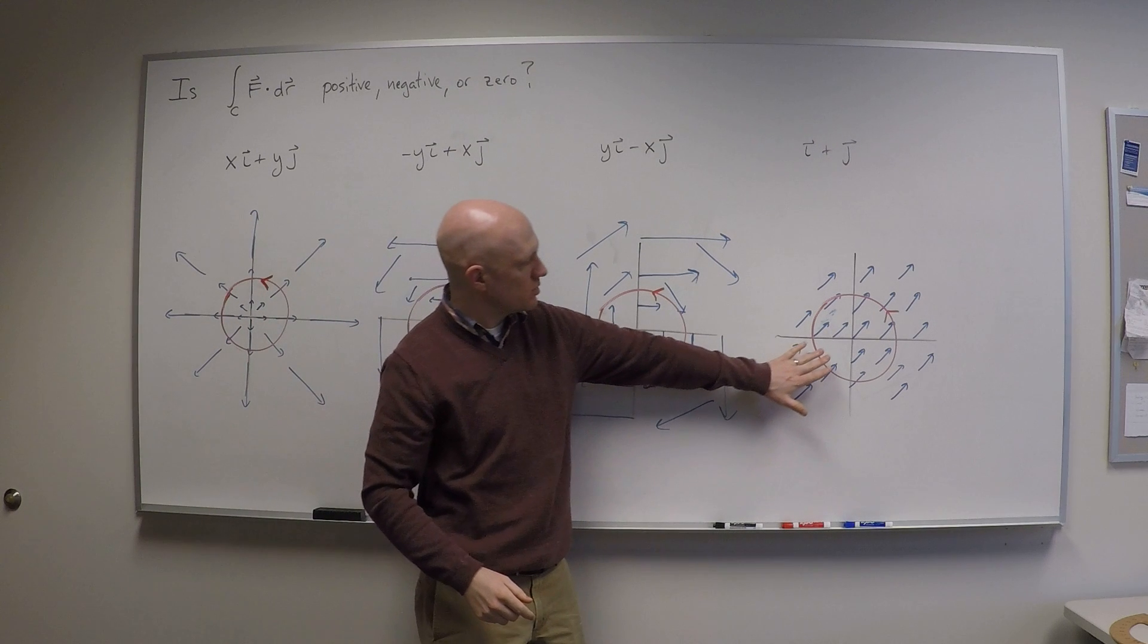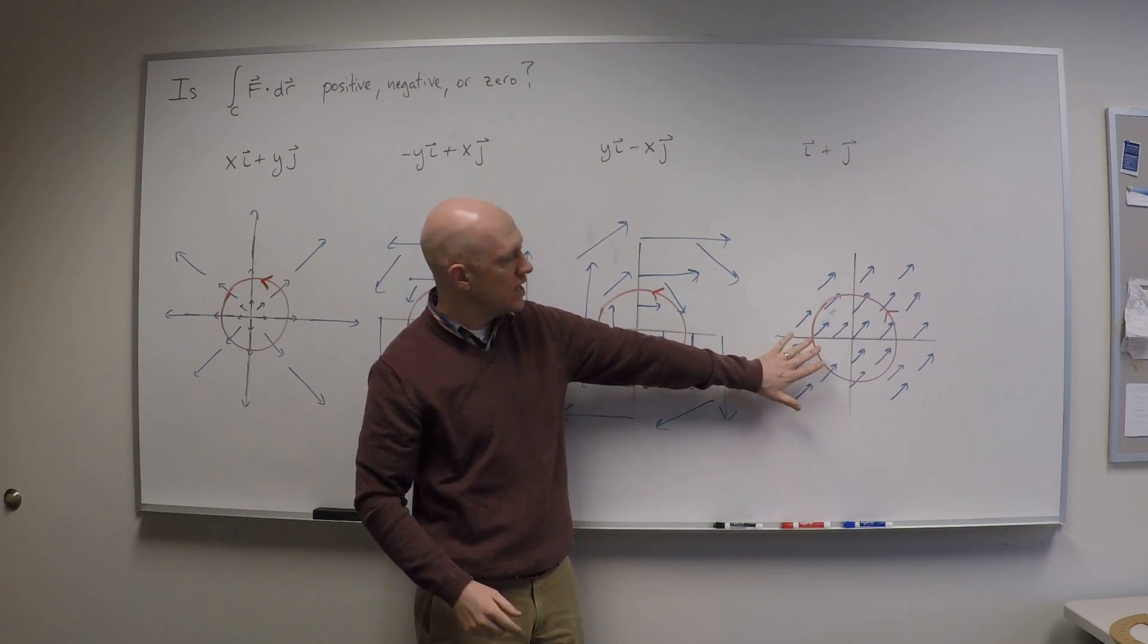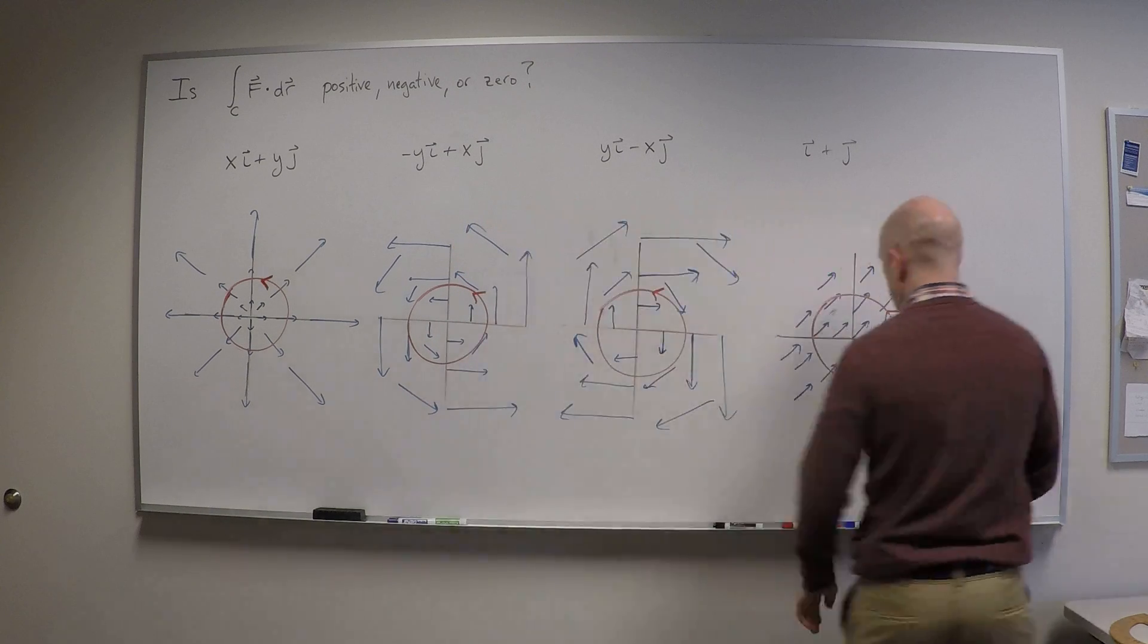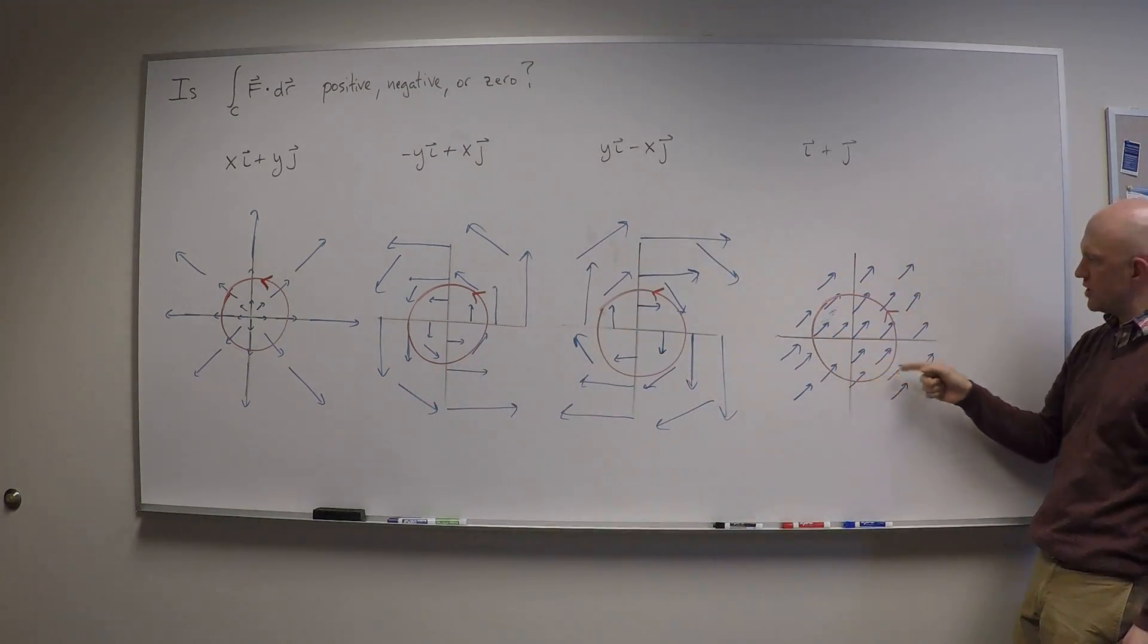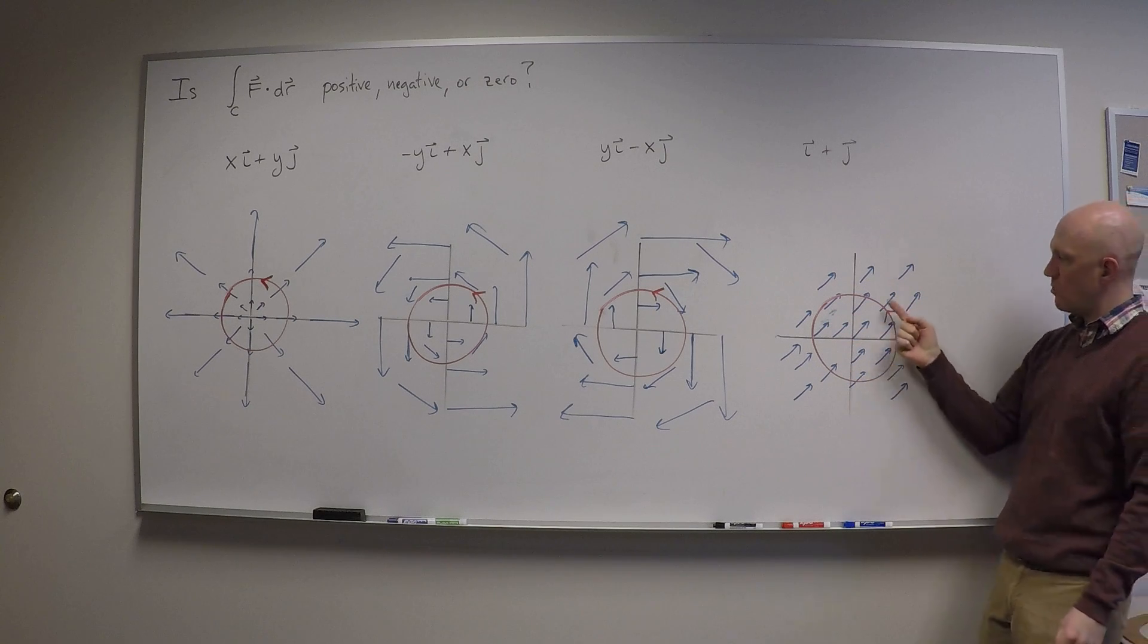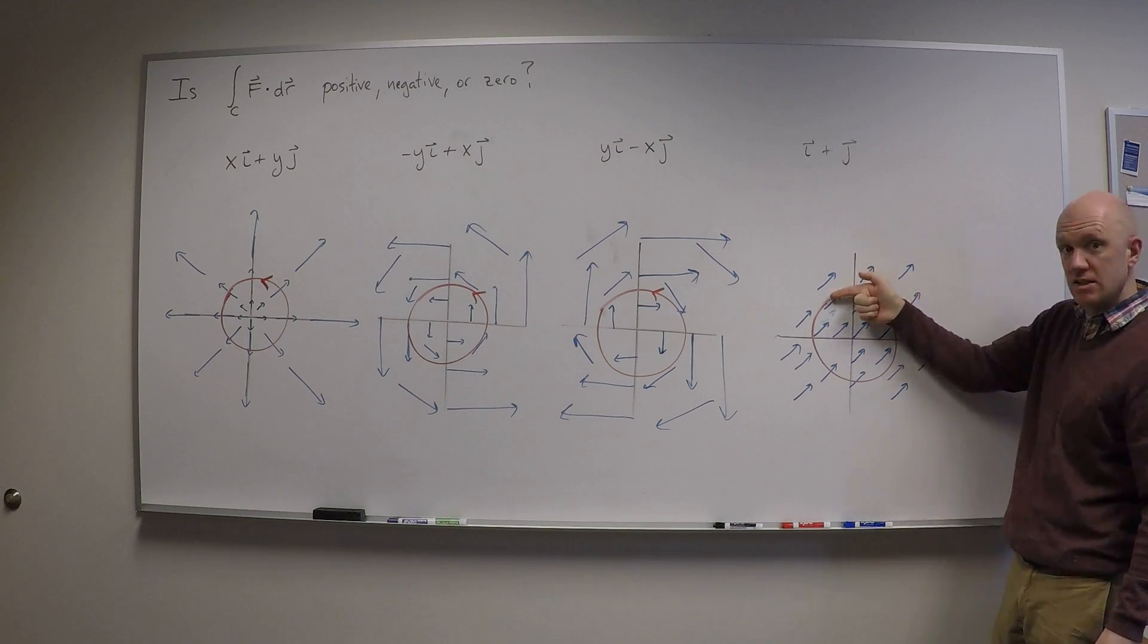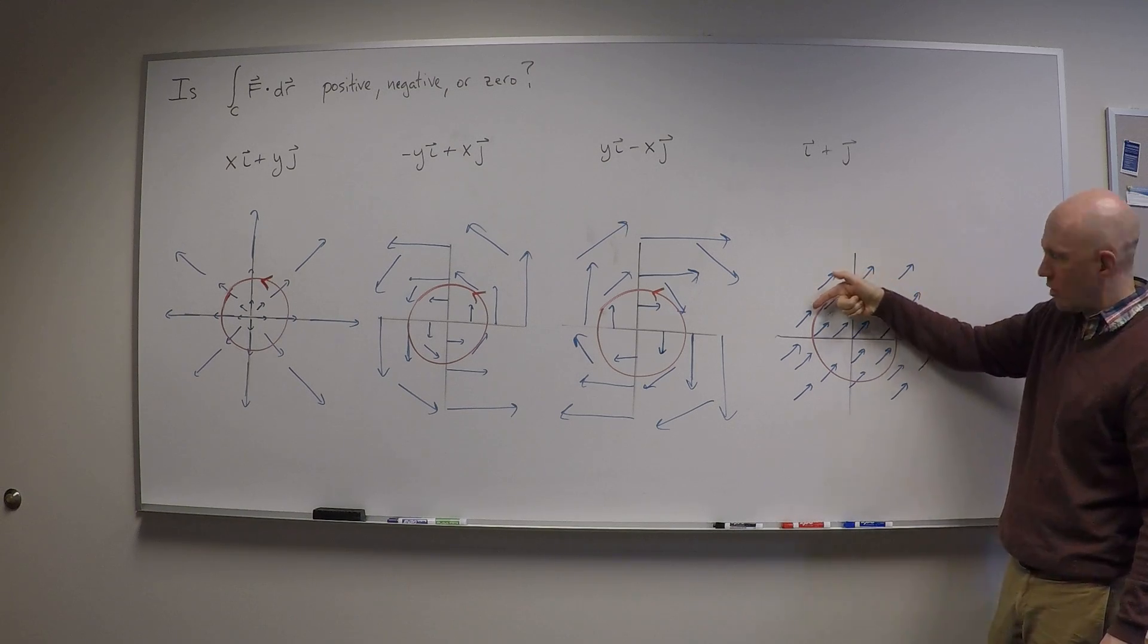The last one is this one, and this one's kind of a combination of both. This is a constant vector field i plus j. For this vector field, as I go around, there's different things that happen in different places. Up here, for instance, I'm kind of moving across the vector field, and as I start to go in this direction, I'm fighting against it, so I'm getting a negative part for my line integral.